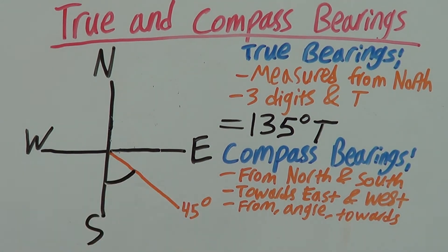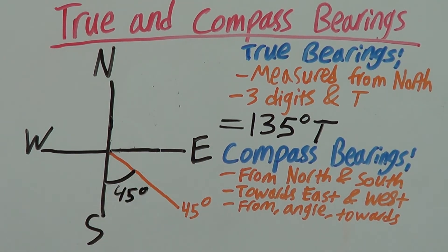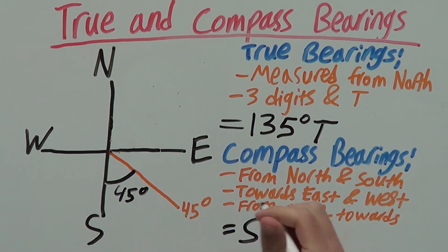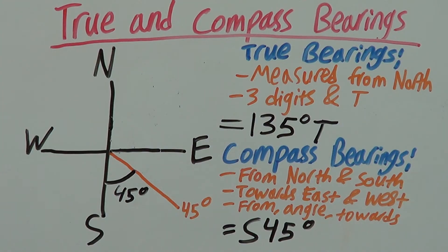And towards east, since our angle is towards east. This is 45 degrees here. So we would write our compass bearing as our from, which is south. Our angle, which is 45. You need the degrees sign. And our towards, which is east.